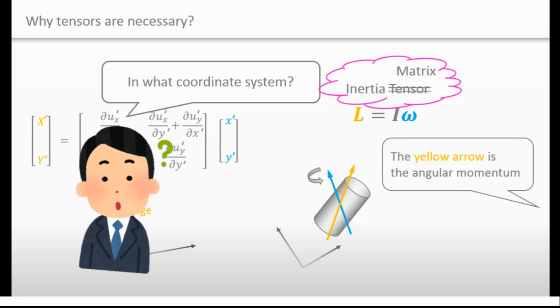However, the relationship between an angular velocity and an angular momentum is a tensor. Even if the coordinate system changes, the angular momentum will never change. That's why an idea of a tensor is important and necessary.